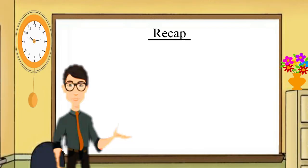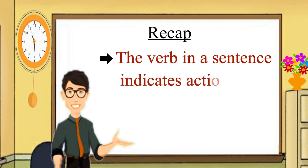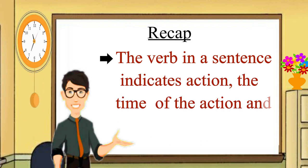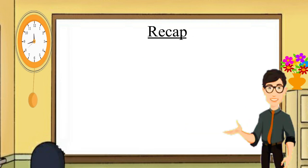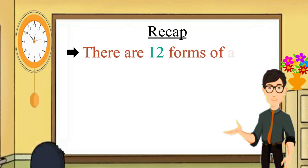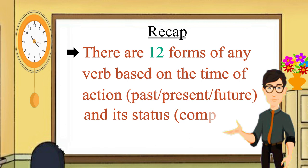Now, for a quick recap. In this module, we learnt that the verb in a sentence does not only indicate action, but also the time of the action and the status of the action. We also learnt that there are 12 forms of any verb based on the time of action, that is past, present or future, and its status, whether the action is complete or still going on.